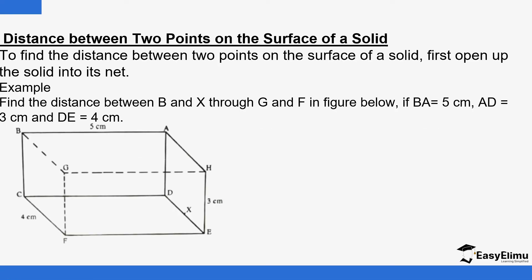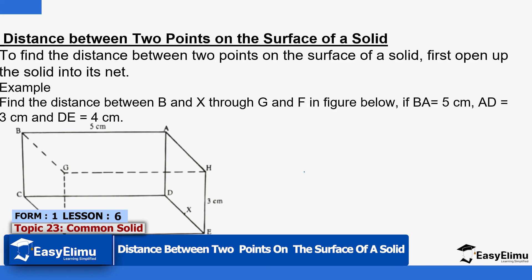So to find the distance between two points on the surface of a solid, first open up the solid into a net. So we have a few examples. The first one is find the distance between B and X through G and F in the figure below. So you'll have to open up the solid into a net.